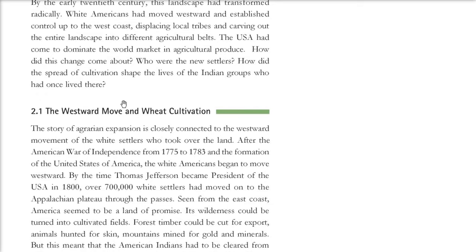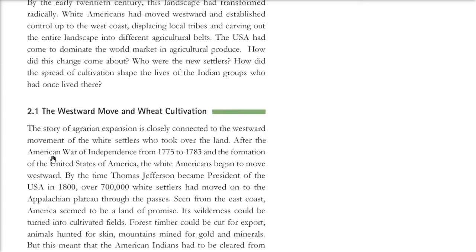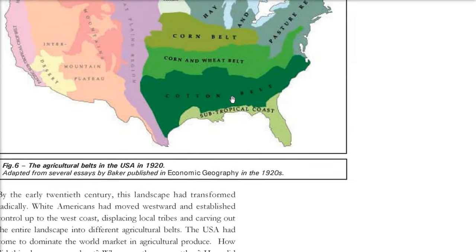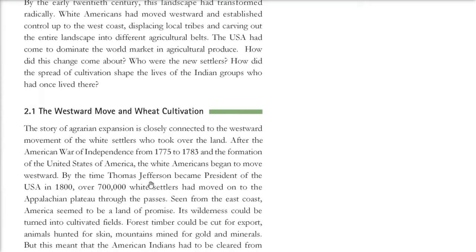There was a westward move, and the story of agrarian expansion is very much connected to the westward movement of white settlers who took over the land. After the American independence war from 1775 to 1783, the USA was formed. White Americans began moving westward, and Thomas Jefferson became president in 1800. Over 700,000 white settlers had moved onto the Appalachian Plateau through various passes.